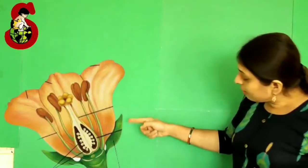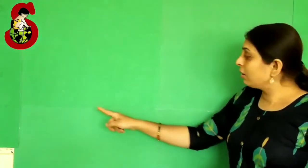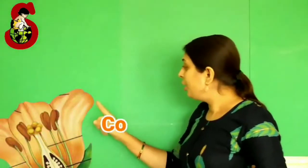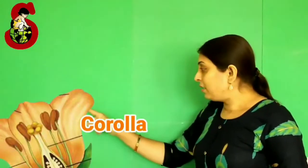Calyx is green in color and the main function of calyx is protection. The second vegetative part of flower is corolla. Above the calyx, whatever colorful part you can observe, that is corolla. The unit of corolla is petal, so petals collectively make corolla. The number of sepals and petals are more or less the same in the flower.